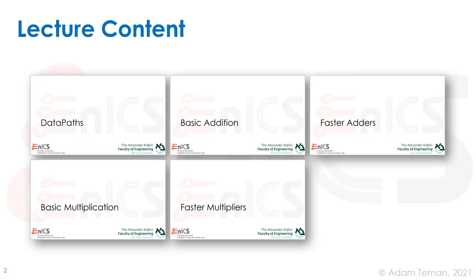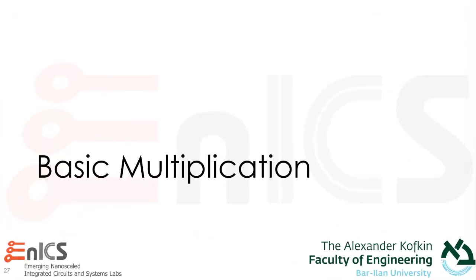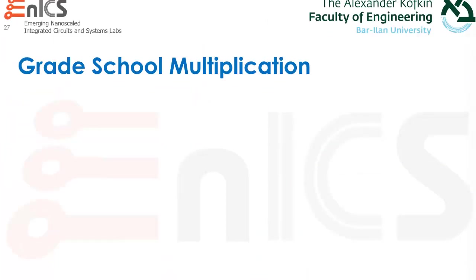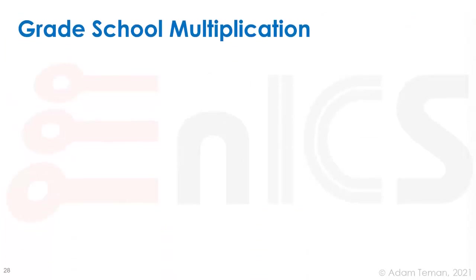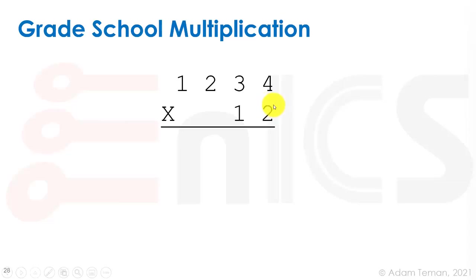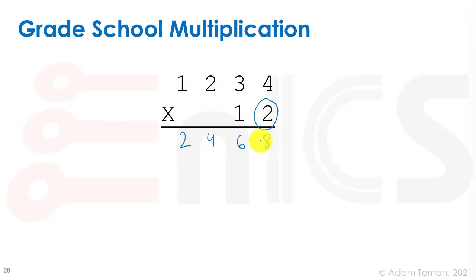After talking about our basic block which is an adder, we can now move on to a more complex block, which is the multiplier. Let's start with basic multiplication and go back to grade school to remember the mechanics. We start with our lowest numeral, which is 2, and multiply it by the entire multiplicand: 2 times 4 equals 8, 2 times 3 equals 6, 2 times 2 equals 4, and 2 times 1 equals 2, giving us one of our partial product vectors.